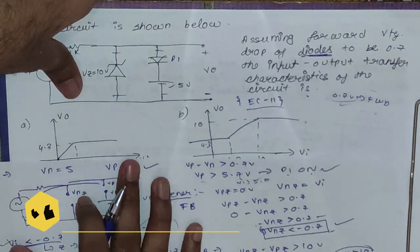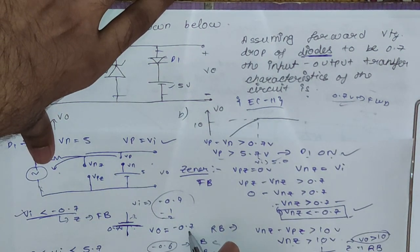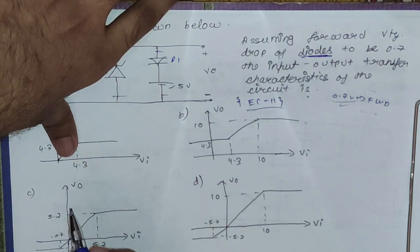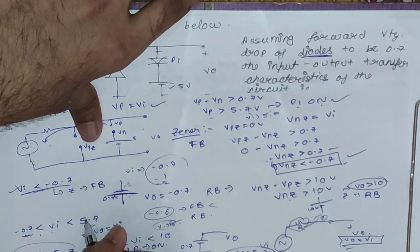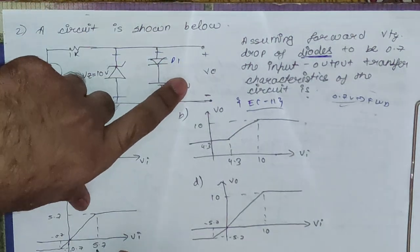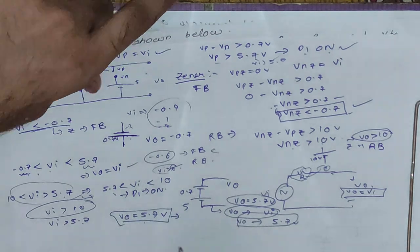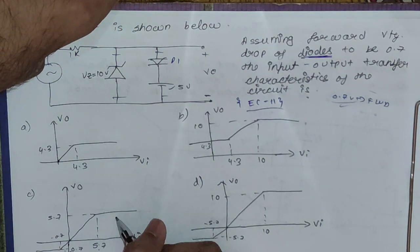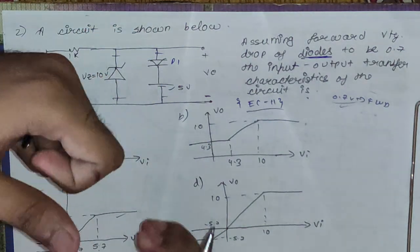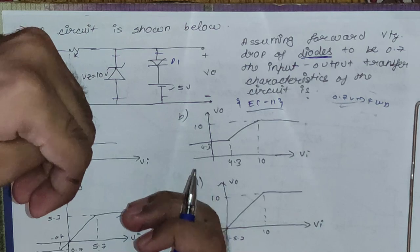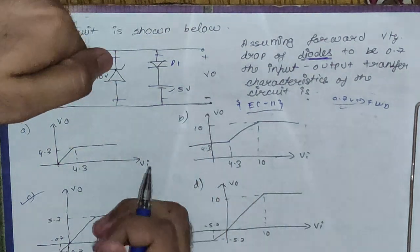Checking the options: for Vi less than minus 0.7 V, Vo should equal minus 0.7 V — option C satisfies this. For minus 0.7 V to 5.7 V, Vo equals Vi — option C shows this correctly. For Vi greater than 5.7 V, Vo equals 5.7 V (saturated) — option C also satisfies this. So option C is the correct answer. With this trick you can solve this type of sum in less than 30 to 45 seconds. That's it for today, thank you!